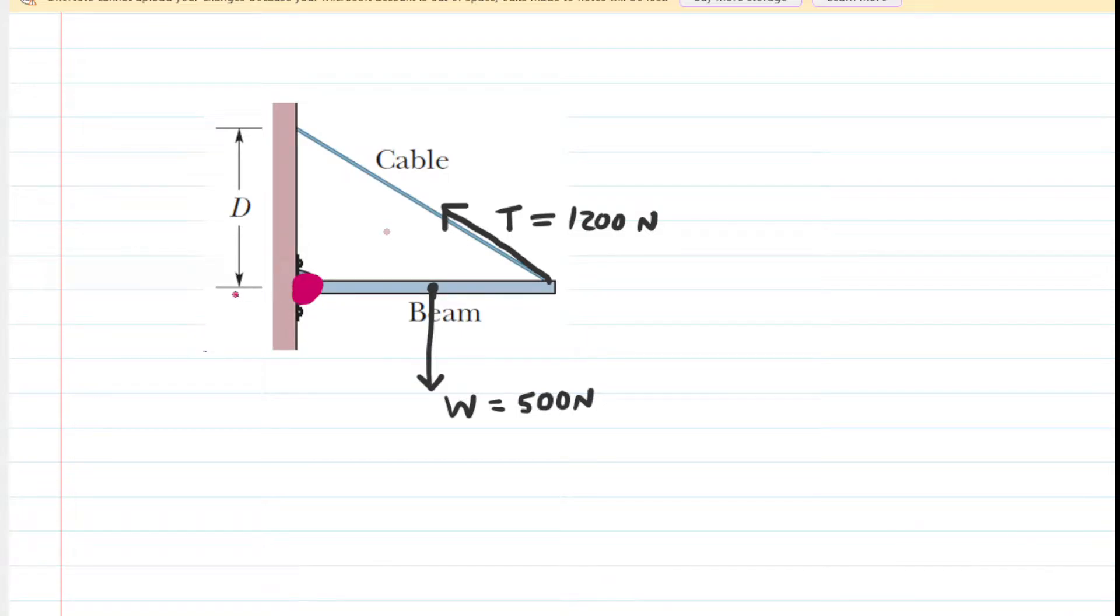So even though, for example, there is a force that the wall exerts on the beam in this direction, we don't need to actually draw that because that force is going to produce zero torque. So the only forces we need to include are the tension and the weight force, because those two forces are not passing through the pivot, and therefore they will produce torque.